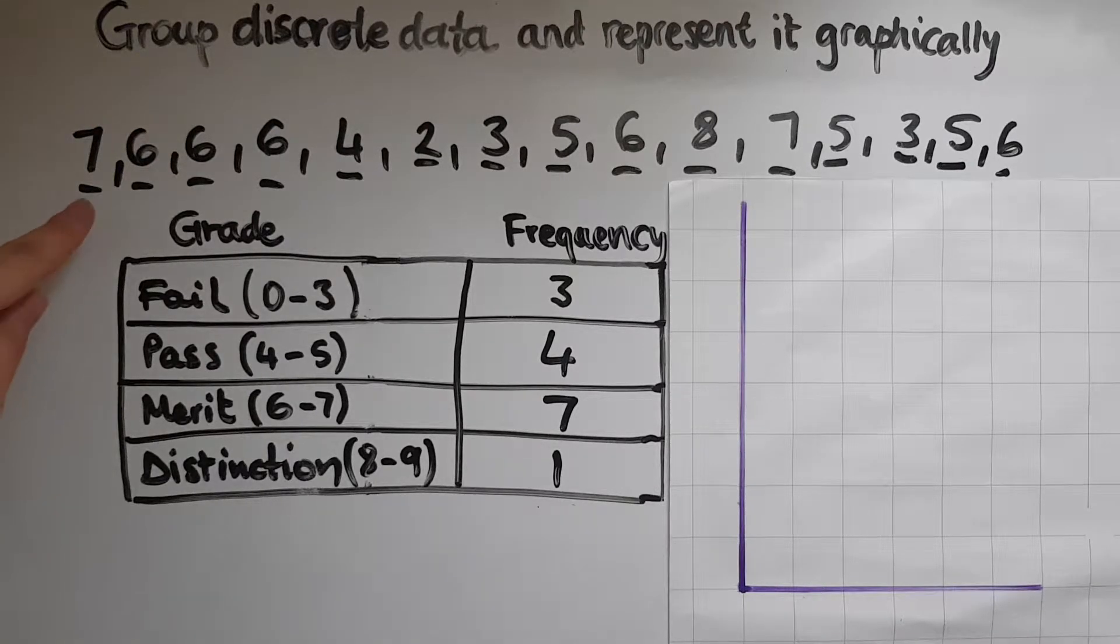So the values that I have here are marks received in a test by students. So the mark can only be 7, it can't be 7.2 for example. So you can only get 6, not 6.3. So it's most of the time whole numbers and specific values.